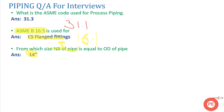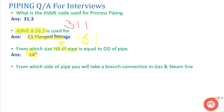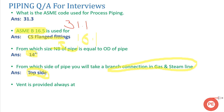From which side of the pipe will you take a branch connection on a gas or steam line? This is a very important question. For a branch connection from a gas or steam line, you have to take it from the top side. This is an engineering consideration we follow when taking a tapping from any pipe.